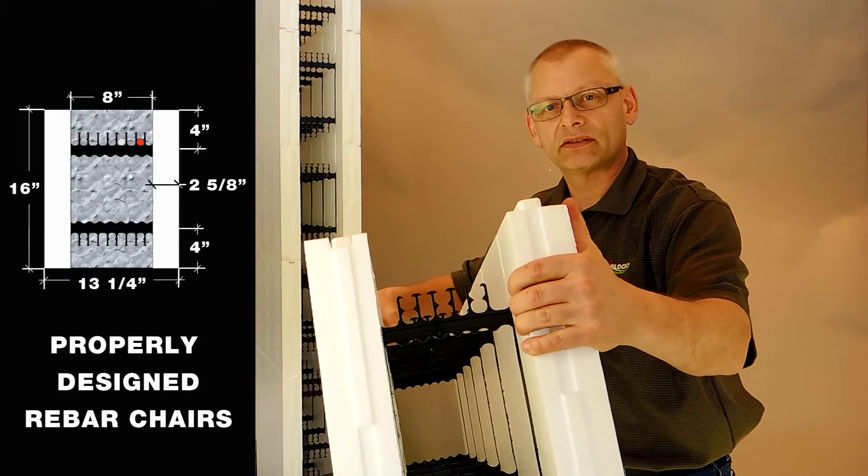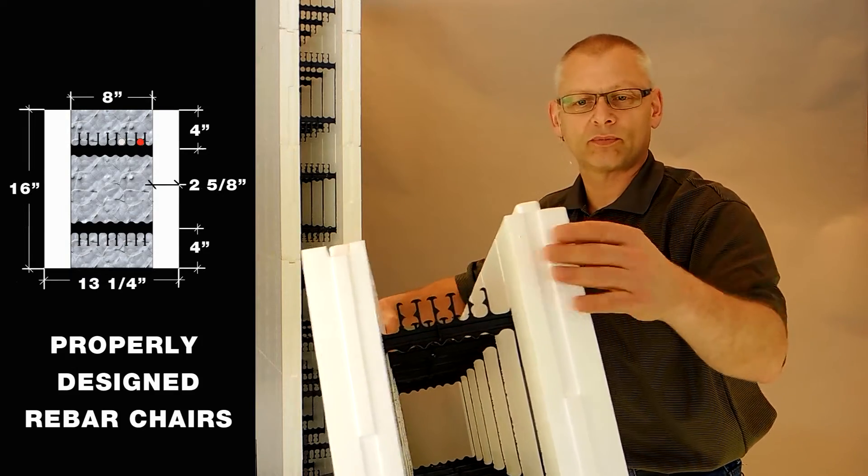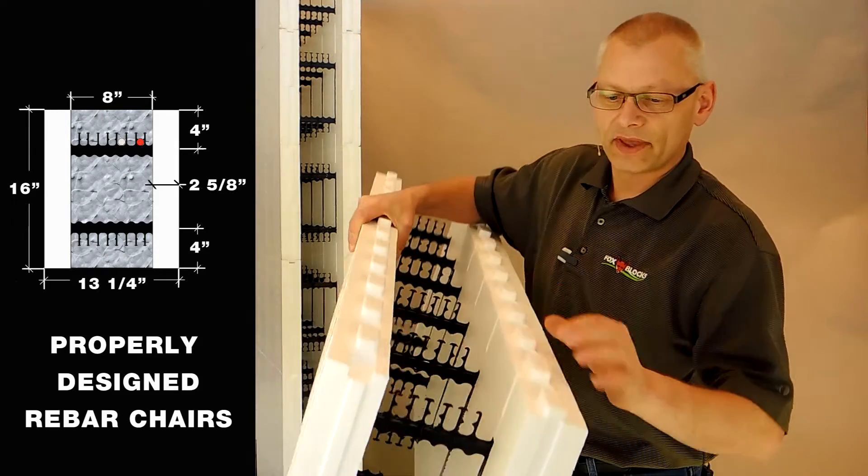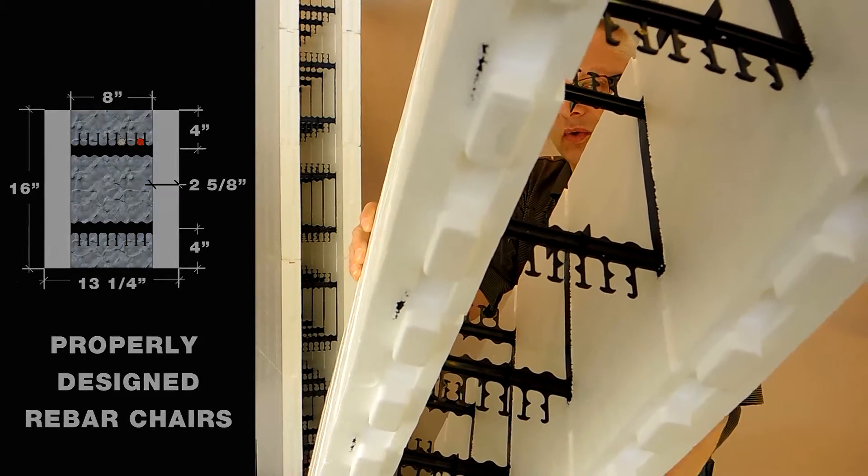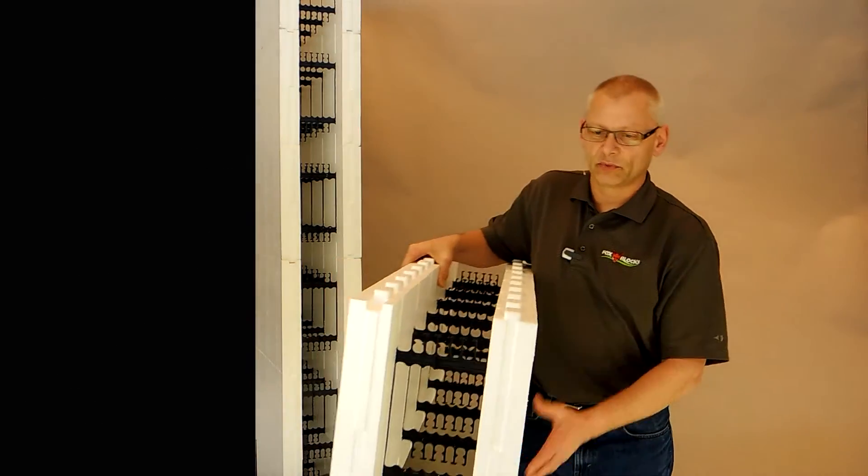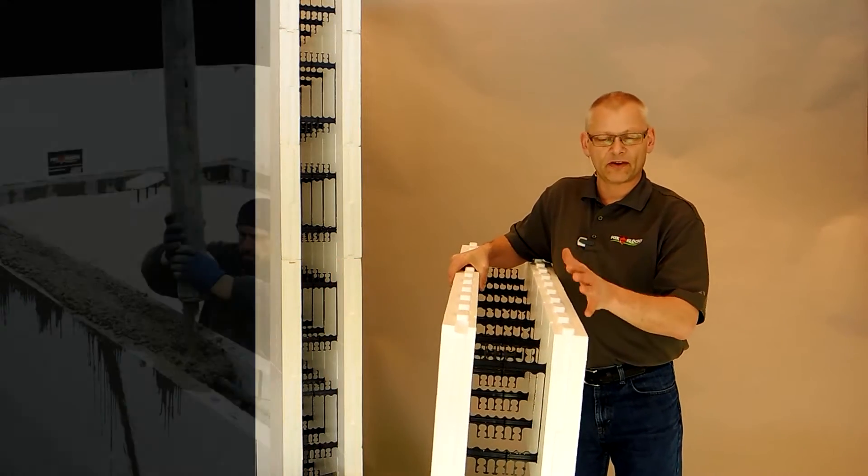This is a 1.5-pound density foam. The EPS is 1.5-pound density, which is very rigid. If you look at the interlock, that interlock is two inches long and one inch wide. Combined with the density of the foam, it's very strong.